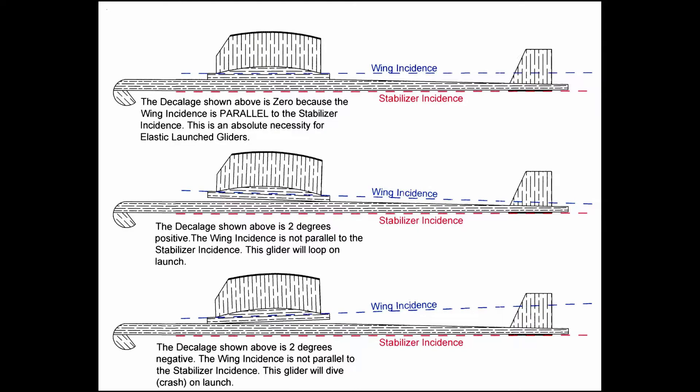Decklage is the angular difference between the wing incidence and the stabilizer incidence. The decklage angle is established when the glider is built. The angle must be zero. If the decklage is not zero, meaning the wing and horizontal stabilizer are not parallel to each other, the glider will never fly properly.